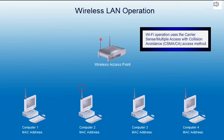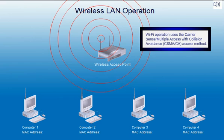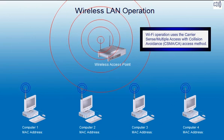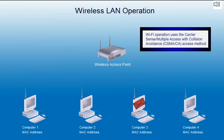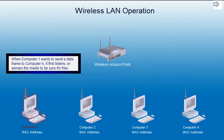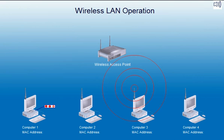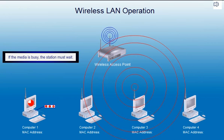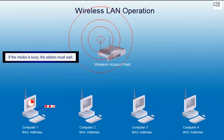Wi-Fi operation uses the carrier sense multiple access with collision avoidance access method. When computer 1 wants to send a data frame to computer 4, it first listens or senses the media to be sure it's free. If the media is busy, the station must wait.